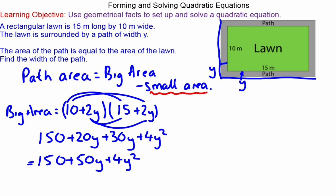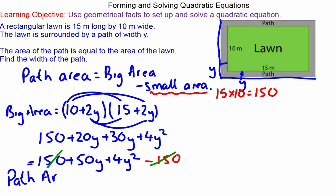The area of the smaller rectangle is just the lawn: 15 times 10 equals 150. Subtracting the small area from the big area, the 150s cancel, so the area of the path is 4y² + 50y.